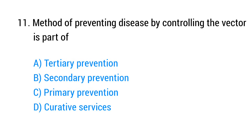Question number 11. Method of preventing disease by controlling the vector is part of? The right answer is option C: Primary prevention.